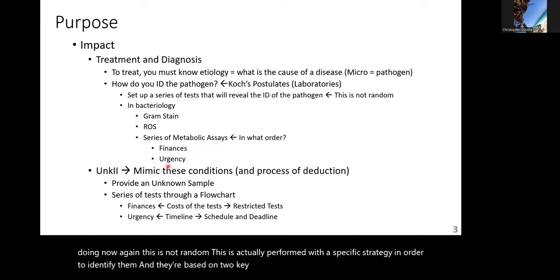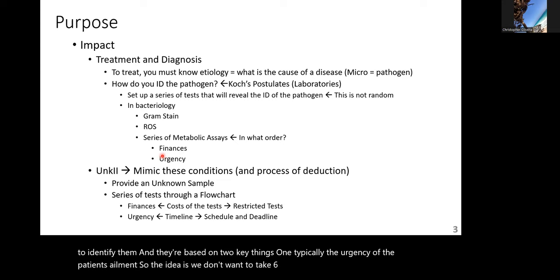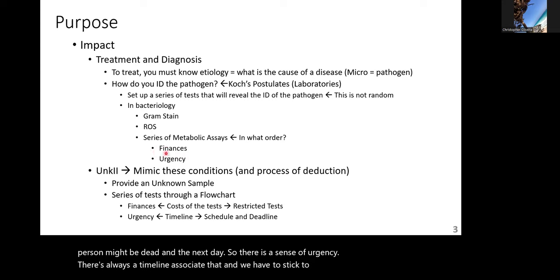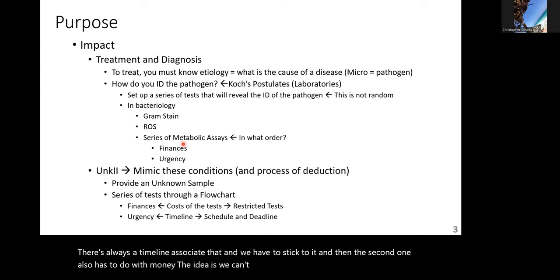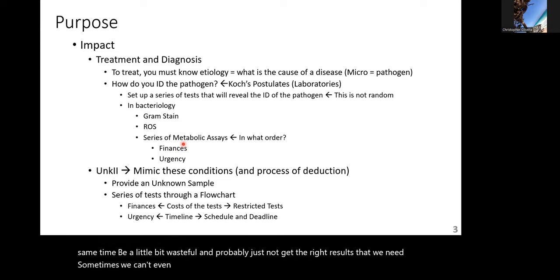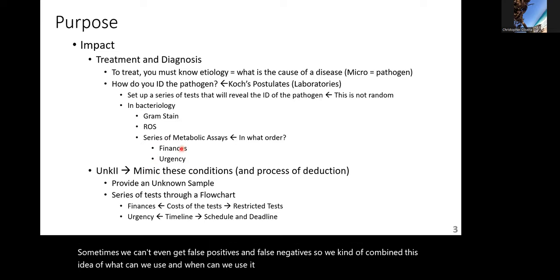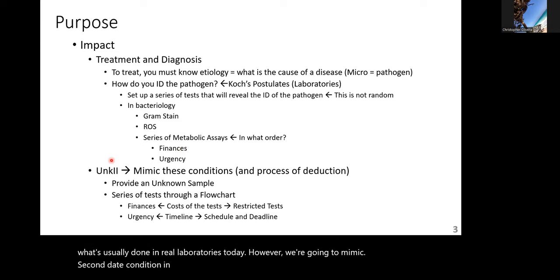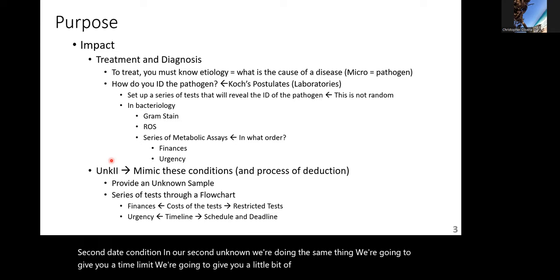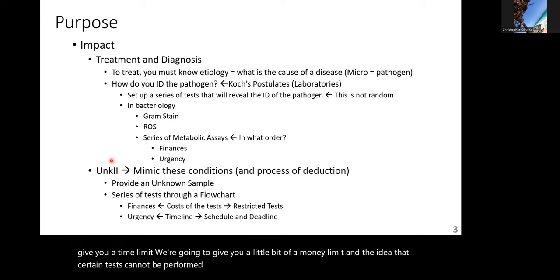The strategy is based on two key things. First, the urgency of the patient's ailments — we don't want to take six days when the person might be dead the next day, so there's always a timeline. Second, money — we can't randomly perform a million tests at once, be wasteful, and risk false positives and false negatives. We combine what tests to use and when, to design a good pathway. That's what's done in real laboratories today.